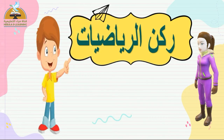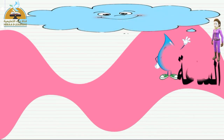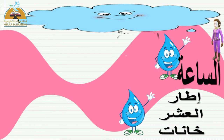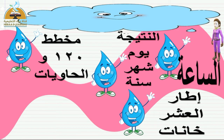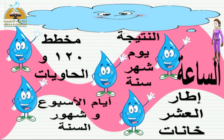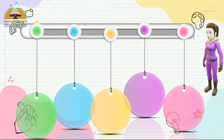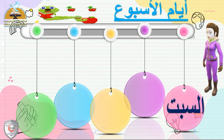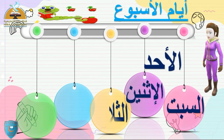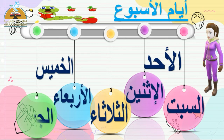بنبدأ بركن الرياضيات. معنا في ركن الرياضيات: الساعة، وإطار العشر خانات، والنتيجة، ويوم وشهر وسنة، ومخطط المائة وعشرون، والحاويات، وأيام الأسبوع، وشهور السنة. يلا بينا نأخد أول حاجة: أيام الأسبوع. الأسبوع كم يوم؟ سبعة أيام: السبت، الأحد، الاثنين، الثلاثاء، الأربعاء، الخميس، الجمعة. نضع دائرة حوالين اليوم اللي إحنا فيه: يوم الاثنين.